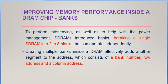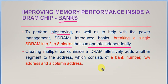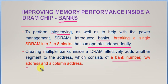Another way of improving performance is by adding more memory banks to enable interleaving, similar to pipelining. SDRAM introduced banks by breaking a single memory into two to eight blocks that operate independently, enabling simultaneous access of different data. Each bank has a bank number, a row address, and a column address, so different banks and their corresponding rows and columns can be accessed in parallel.